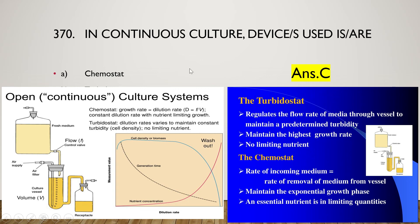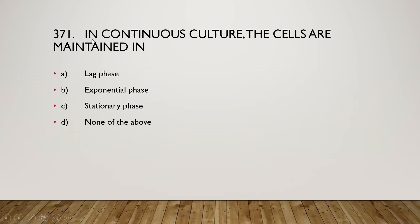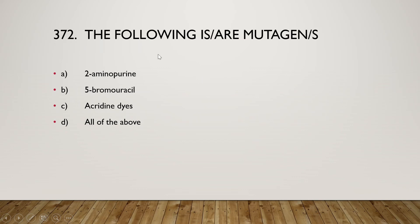Next: in continuous culture, cells are maintained in lag phase, exponential phase, stationary phase, or none? The right answer is option B, exponential phase. Next: which of the following are mutagens — 2-aminopurine, 5-bromouracil, acridine dyes, or all of them? The right answer is option D, all of the above are mutagens.